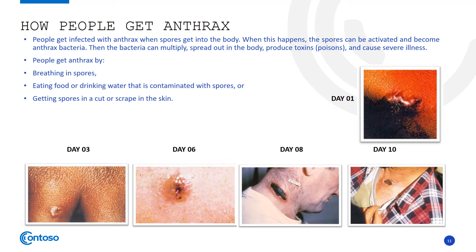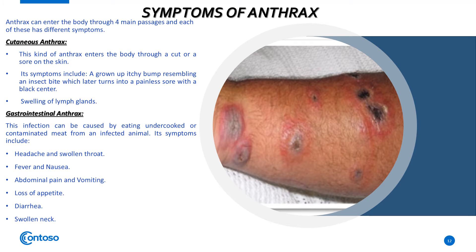The following picture shows the phases of Anthrax in people. Symptoms of Anthrax: Anthrax can enter the body through 4 main passages, and each passage has different symptoms. Number 1 is Cutaneous Anthrax — the symptom is swelling of lymph glands. Number 2 is Gastrointestinal Anthrax — the main symptoms are fever, nausea, loss of appetite, diarrhea, and swollen neck.